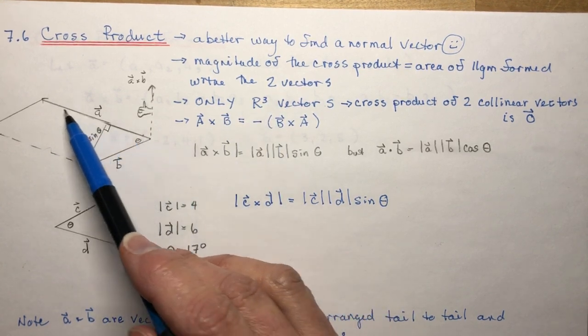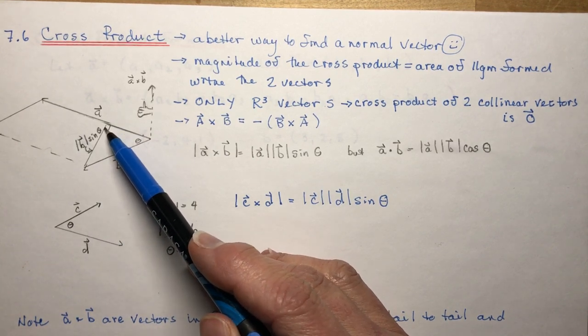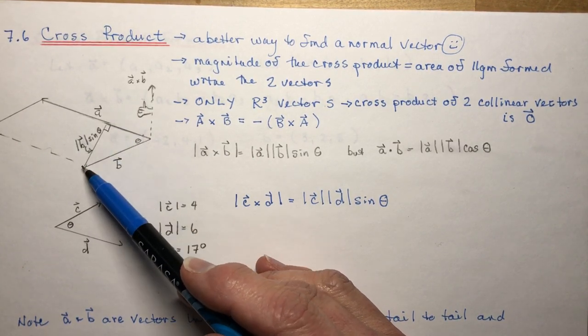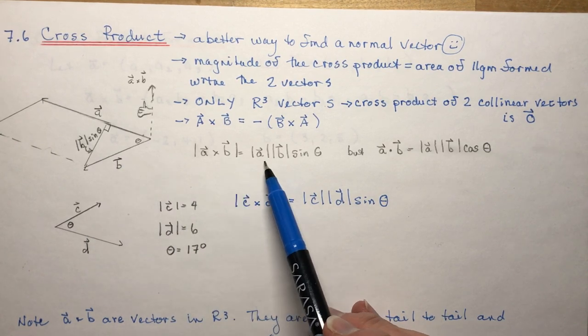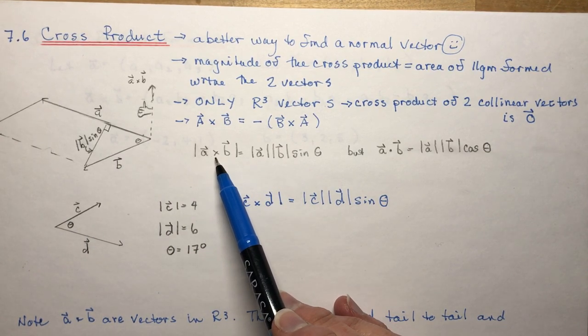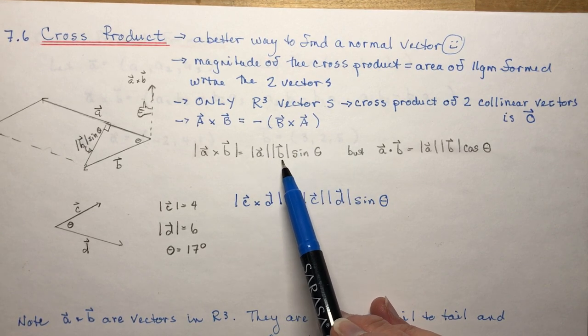If you look at this little diagram here if I had vector a and vector b and this height of my parallelogram of course would be b sine theta and that happens to be the magnitude of the cross product will give me this a b sine theta.